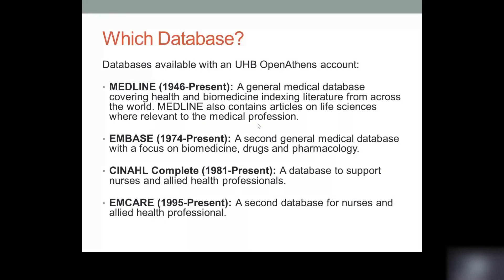Once you have planned your search it's time to think about what databases you want to use. There's no minimum or maximum, but how many you choose will depend on your search. Here we'll provide a few examples of databases — remember this is not an exhaustive list. Starting with those available with a UHB Open Athens account: first, Medline, which is a general medical database covering health and biomedicine from across the world, including life sciences relevant to the medical profession. Second, Embase, another general medical database focusing on biomedicine that also includes literature on drugs and pharmacology. We also have CINAHL Complete and Emcare, which are databases designed to support nurses and allied health professionals.